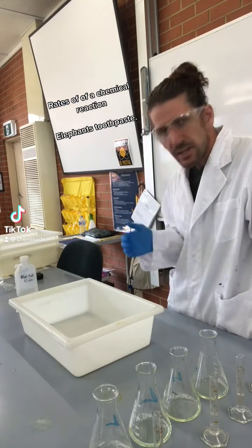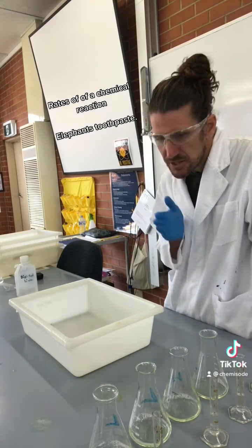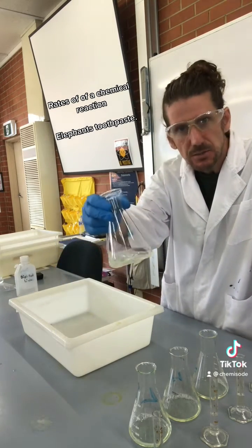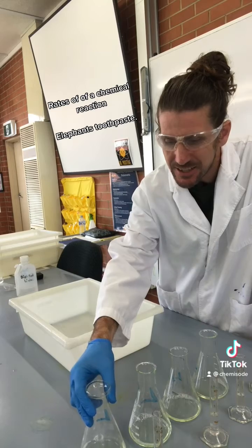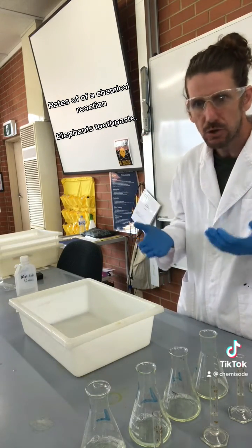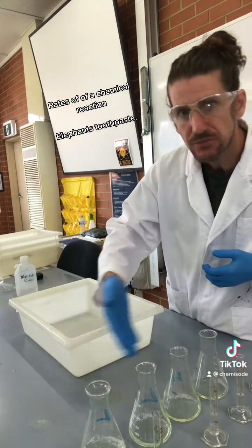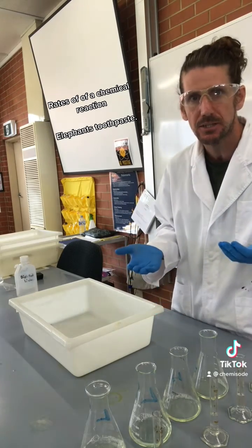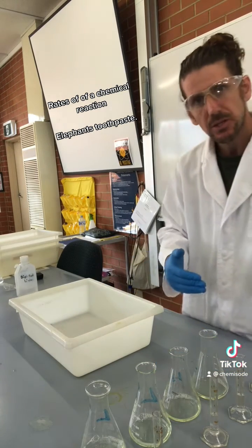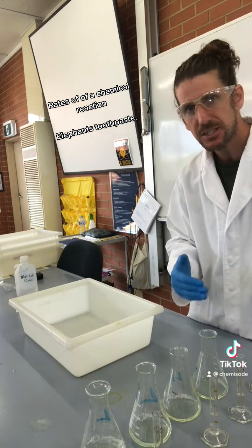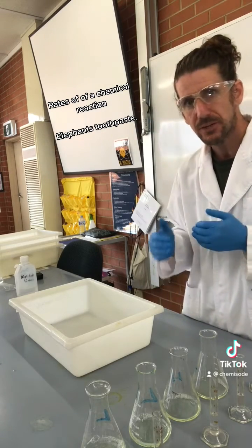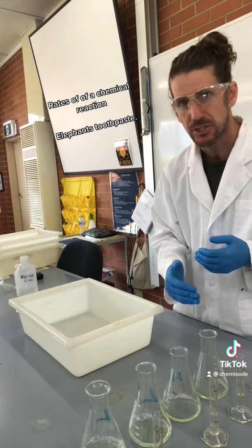This demonstration is looking at rates of reaction, using the Elephant's toothpaste reaction, which involves taking some hydrogen peroxide and adding a catalyst to it to decompose that into oxygen gas and water. I've got a range of different concentrations of hydrogen peroxide, going from a low concentration all the way up to 50% hydrogen peroxide, and we're going to observe the different rates of reaction based on the concentration.